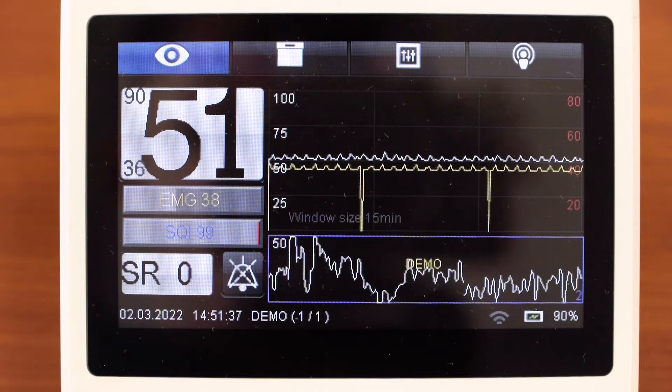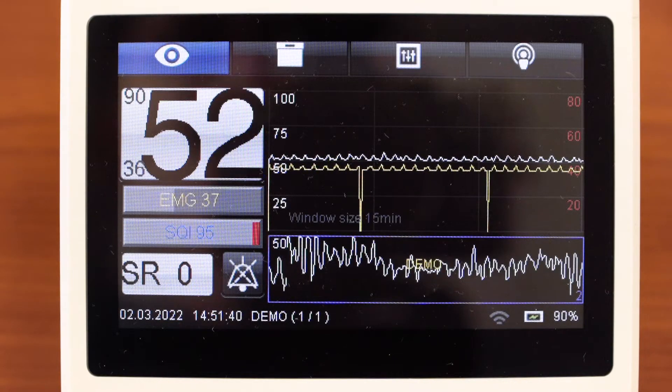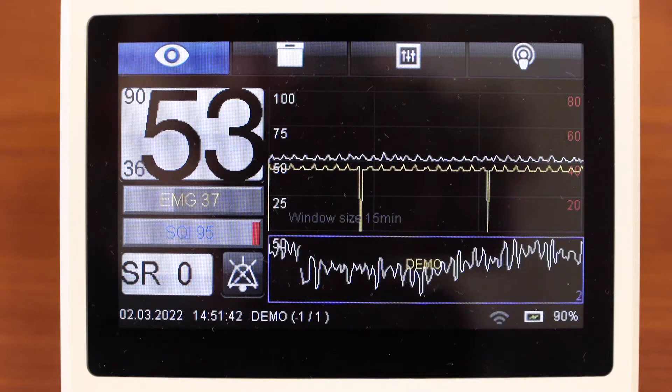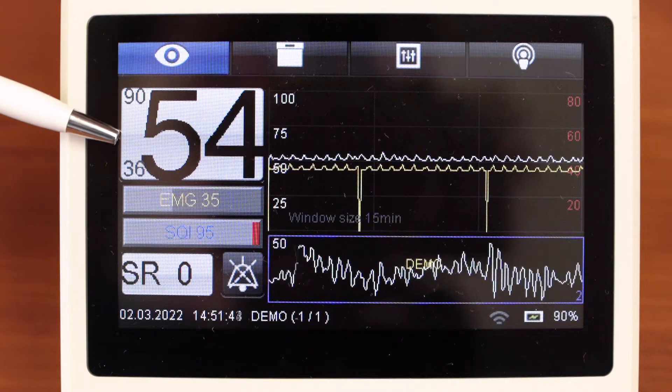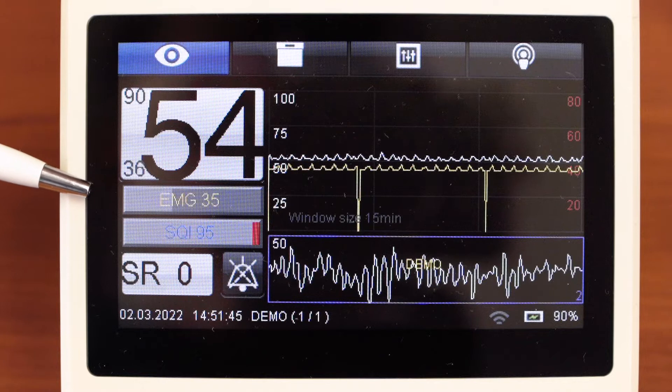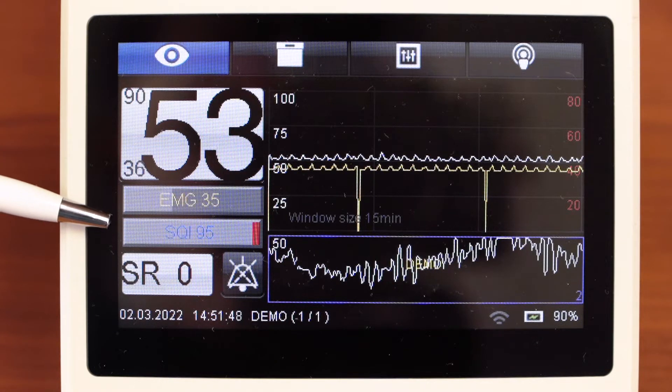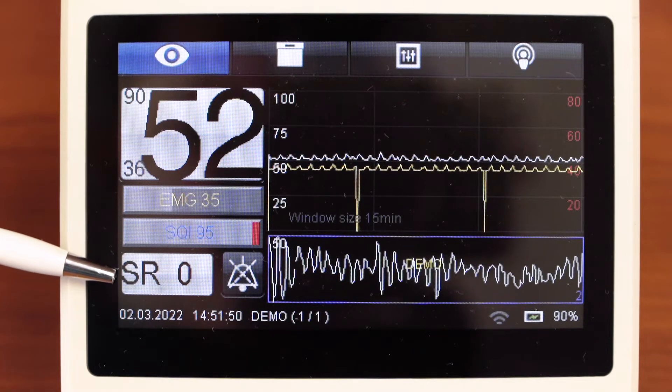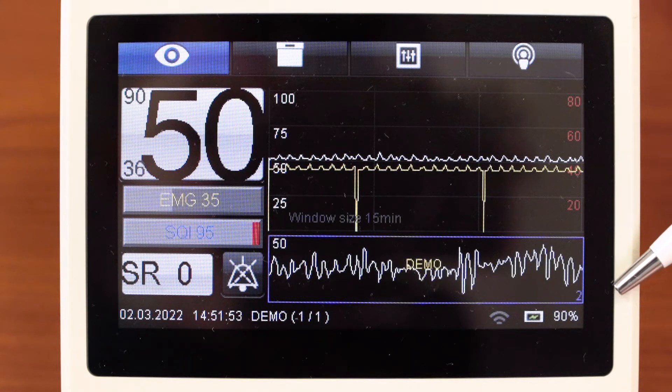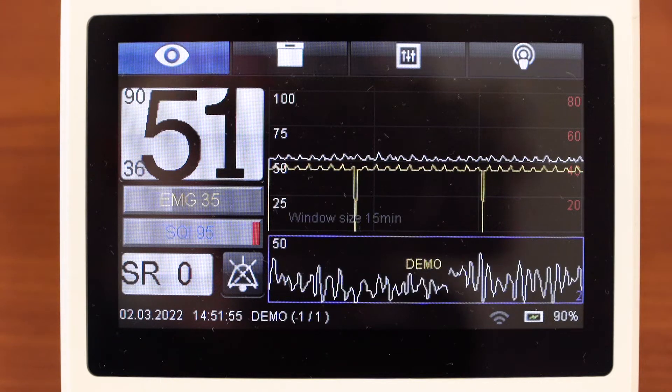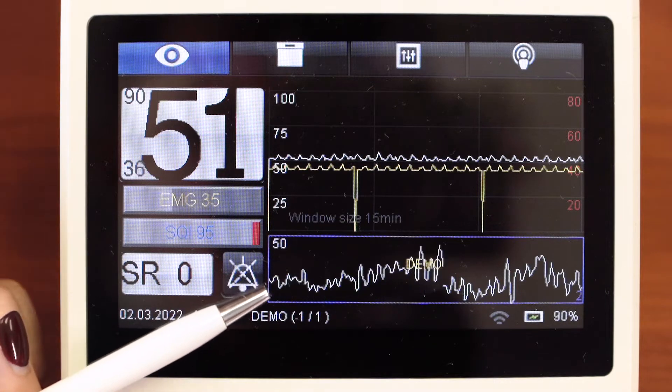There are 4 windows on the display. The first window is monitoring. We can see the main parameters: brain activity index, electromyography component, signal quality index, and suppression rate. Also we can see RAW EEG signal or EEG spectrum, and alarm silence button.